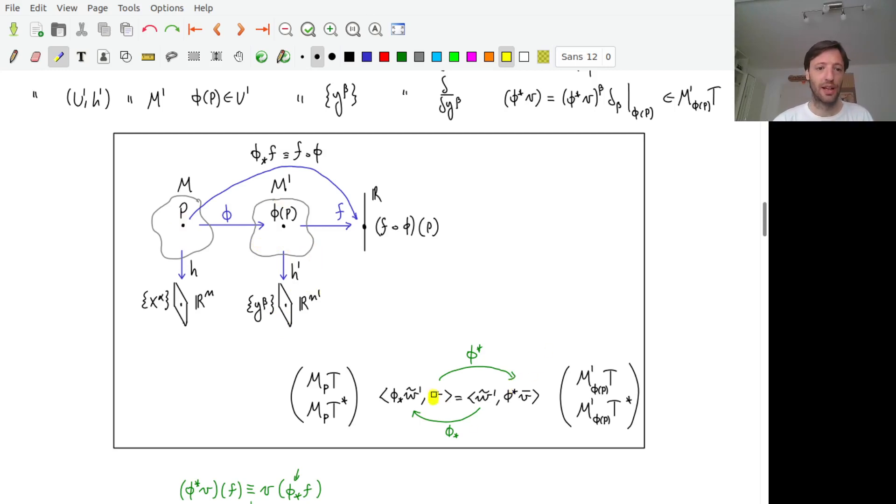In which you can think at the starting vector and at the arrival vector as two different things. So you are kind of transforming your vector through the map given by the push forward.